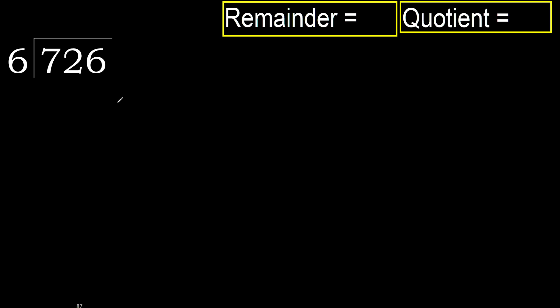726 divided by 6. 7 is not less, therefore with 7 and 6, multiply by which number is nearest to 7 but not greater.